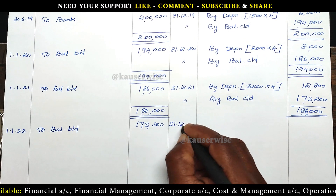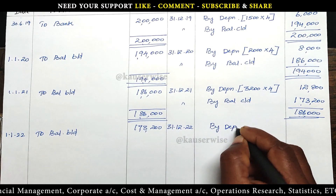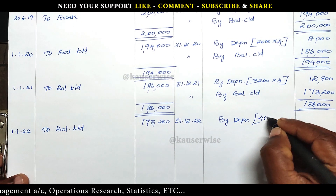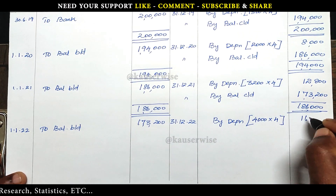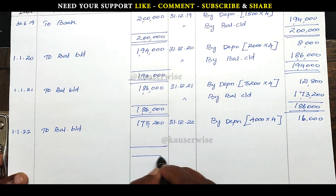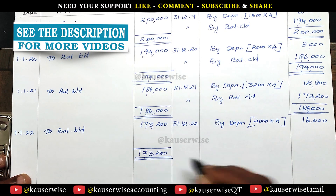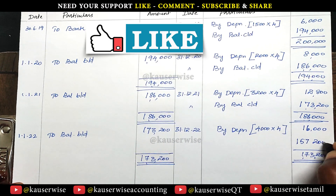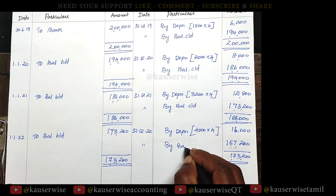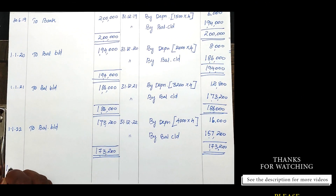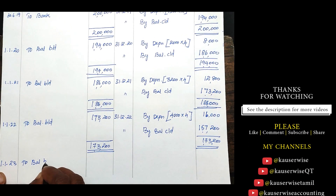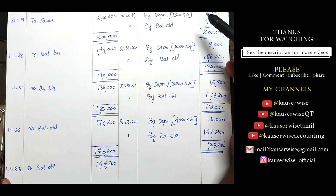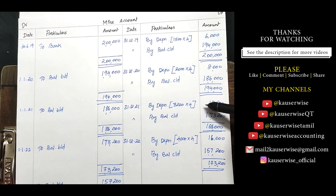At end of the year — 31st December 2022 — by depreciation. For 2022, 4,000 tons were extracted. 4,000 into 4 rupees per ton equals 16,000 rupees. Total: 1 lakh 73,200 minus 16,000 = balance of 1 lakh 57,200, carried down. On 1st January 2023, balance brought down: 1 lakh 57,200. This is the way to prepare the mine account to record depreciation for each and every year according to depletion or output method.